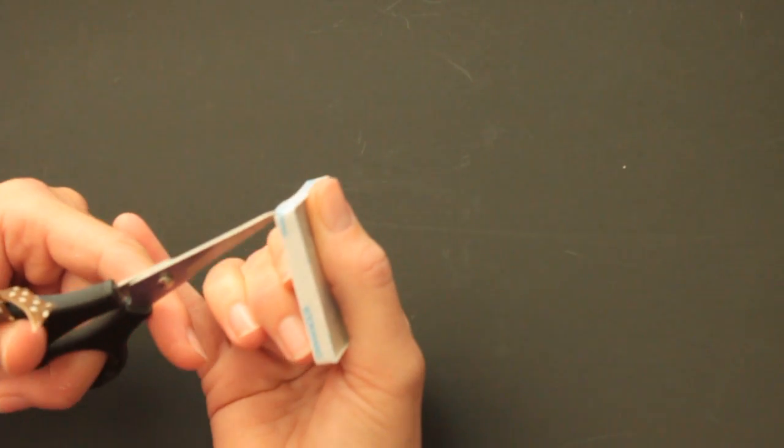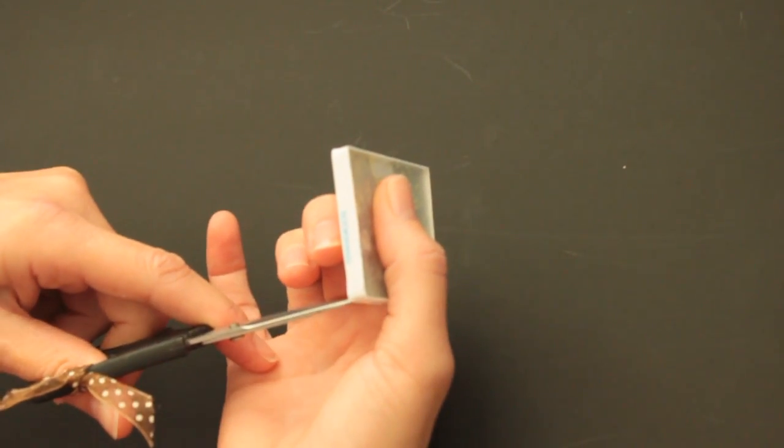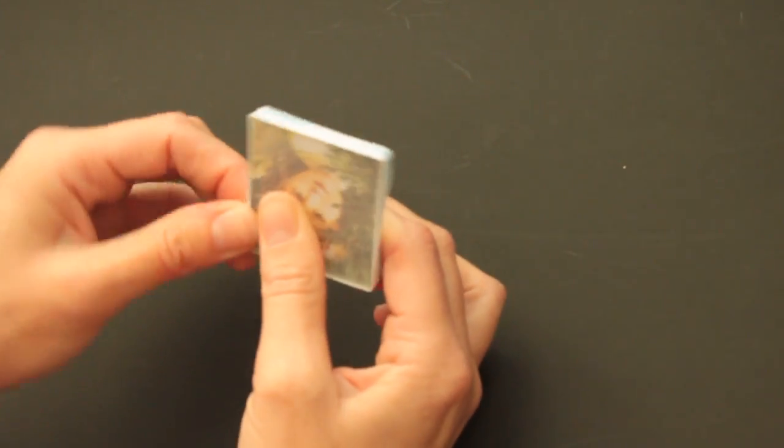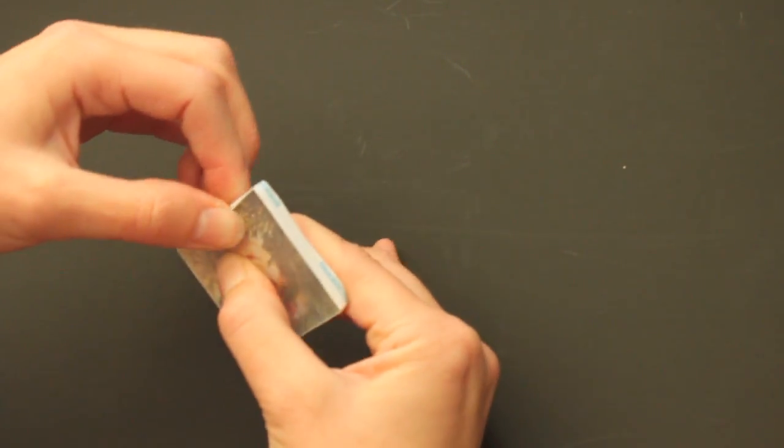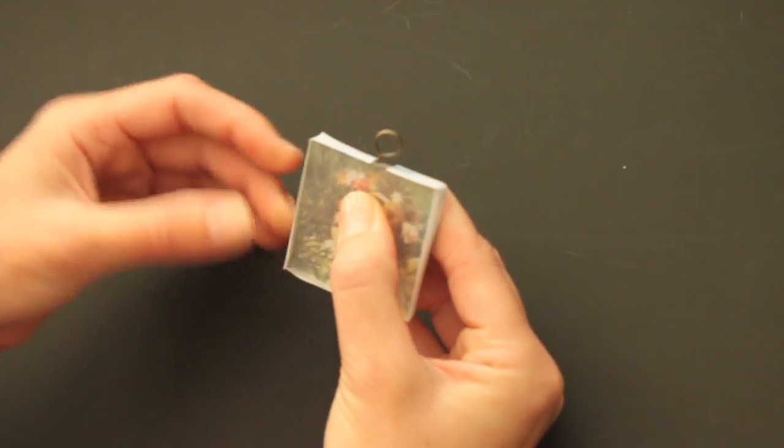And usually I have the scissors in my other hand if you're wondering why I'm cutting so strangely. I fold it over. I'm using quarter-inch tape.